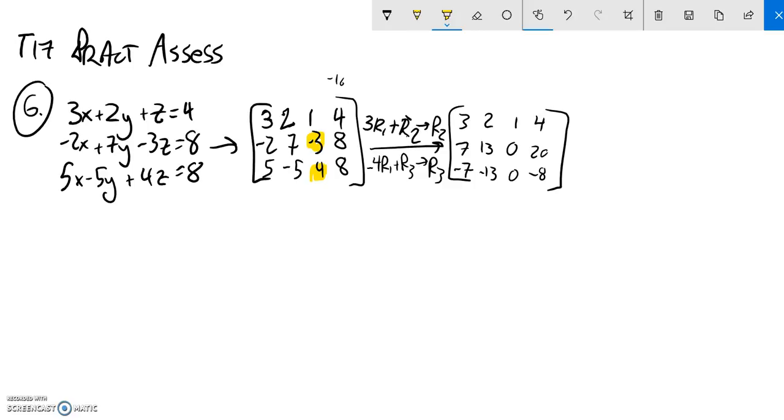I'm going to add these rows together. Watch what happens—you can probably see it already. When I add row 2 and row 3 together, put that into row 3. Row 1 stays as it is, row 2 stays as it is. Now 7 plus negative 7 is 0, 13 plus negative 13 is 0, 0 plus 0 is 0, and 20 plus negative 8 is 12.